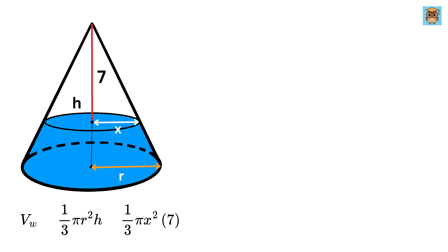Therefore, the volume of the water will be 1 by 3 times pi times R squared times H minus 1 by 3 times pi times X squared times 7.